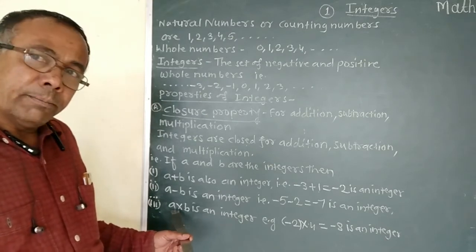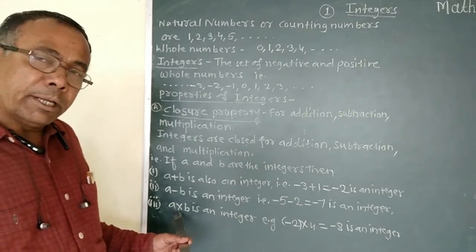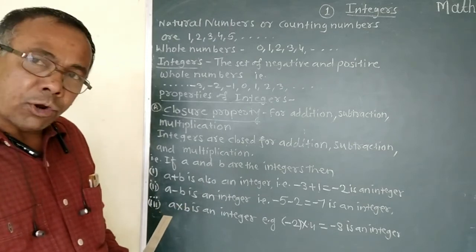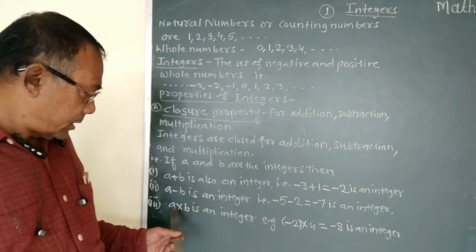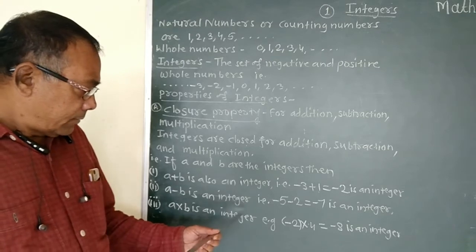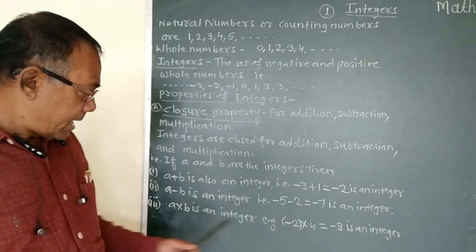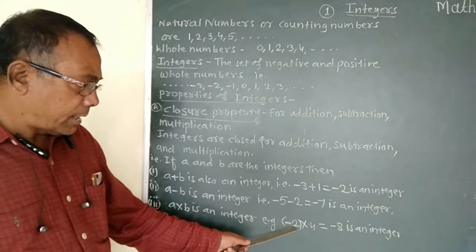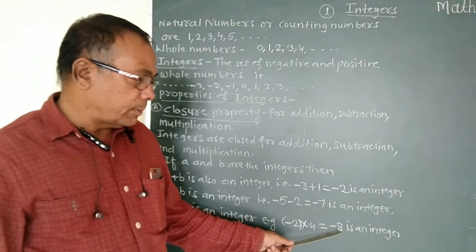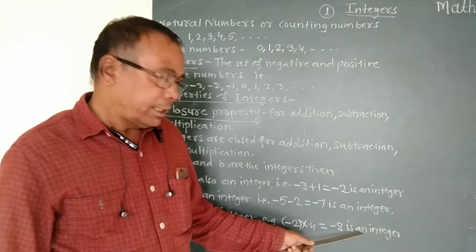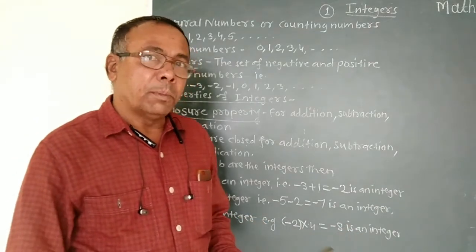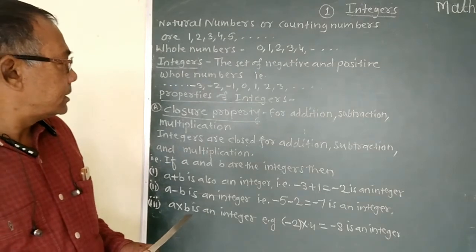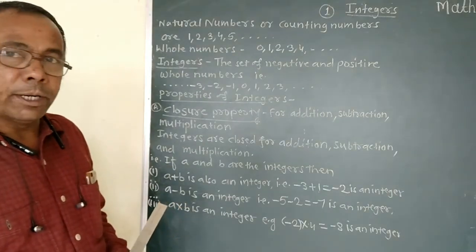Now we will see whether the multiplication of two integers is an integer or not. So a into b — for example, a is minus 2 and b is 4 — then minus 2 into 4 equals minus 8, which is an integer. Therefore, multiplication of two integers satisfies the closure property.